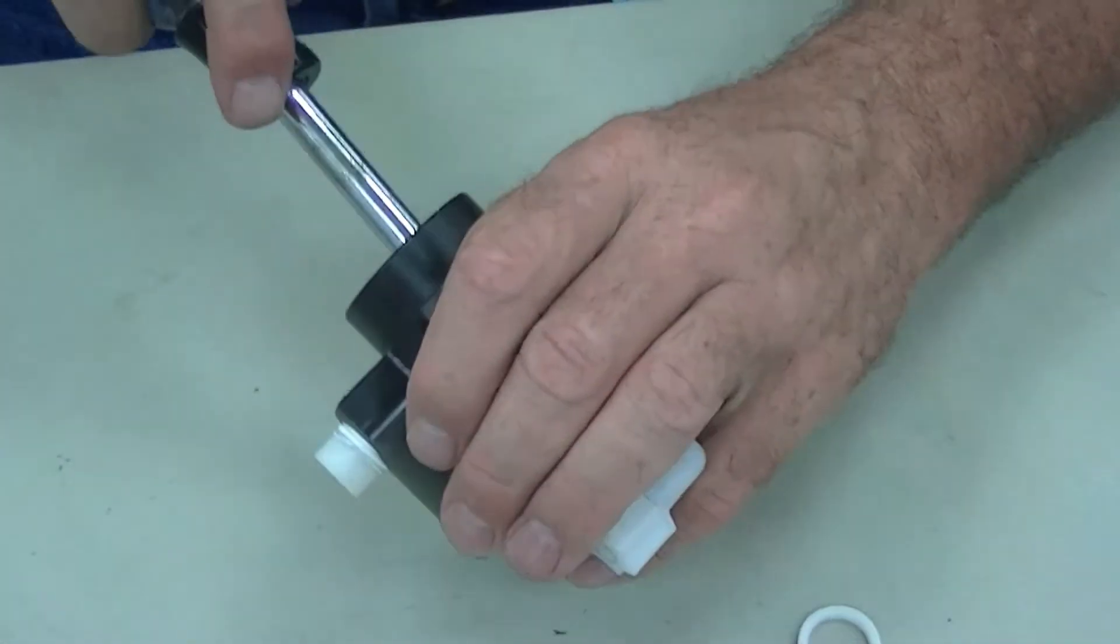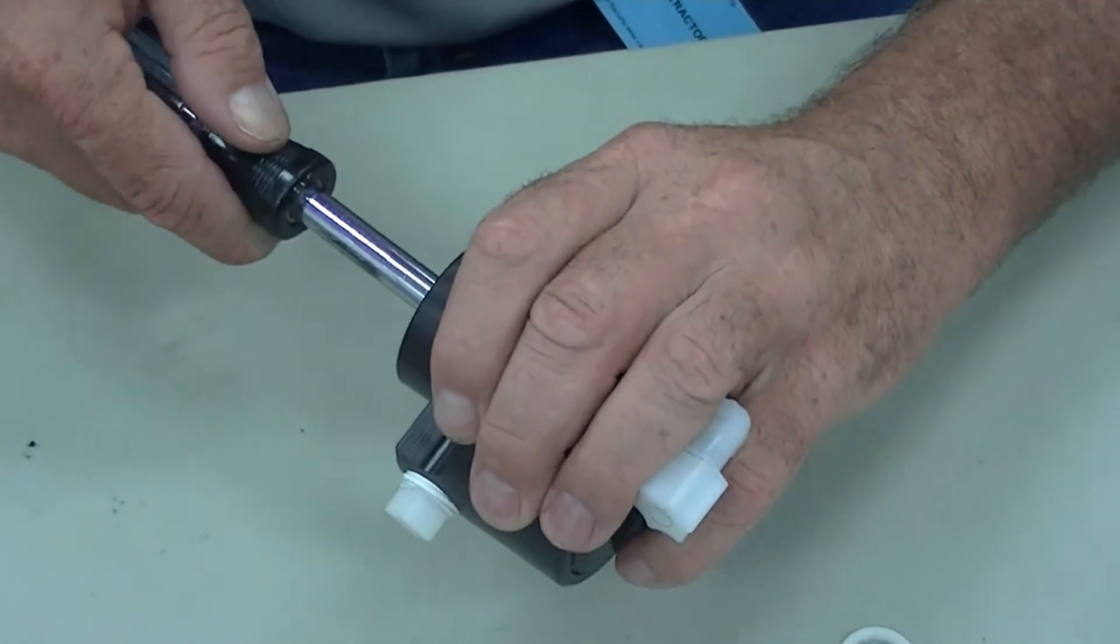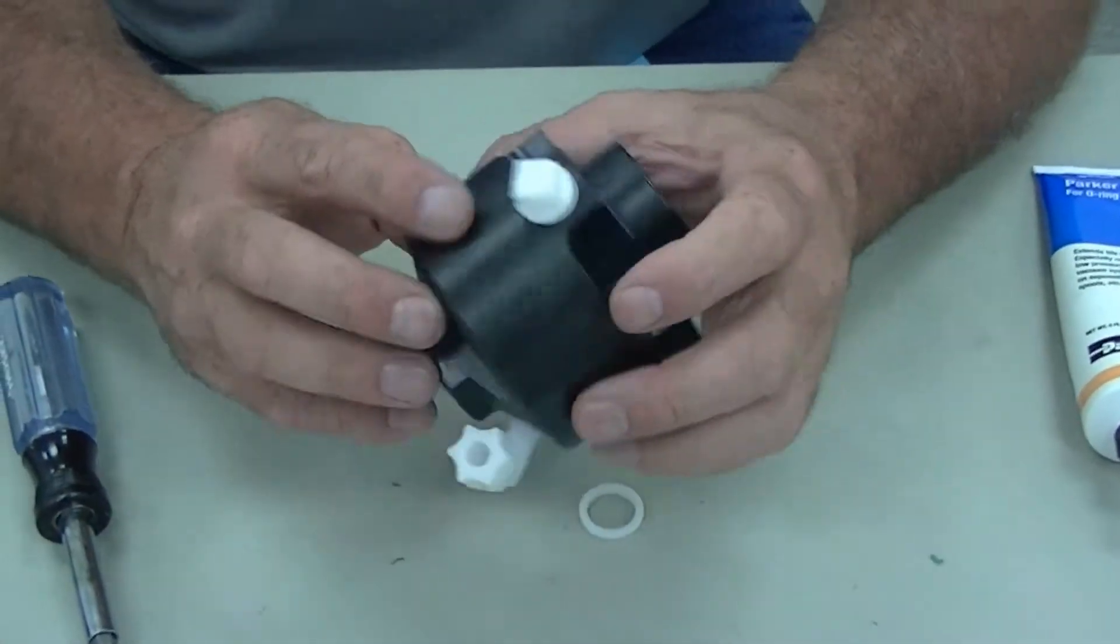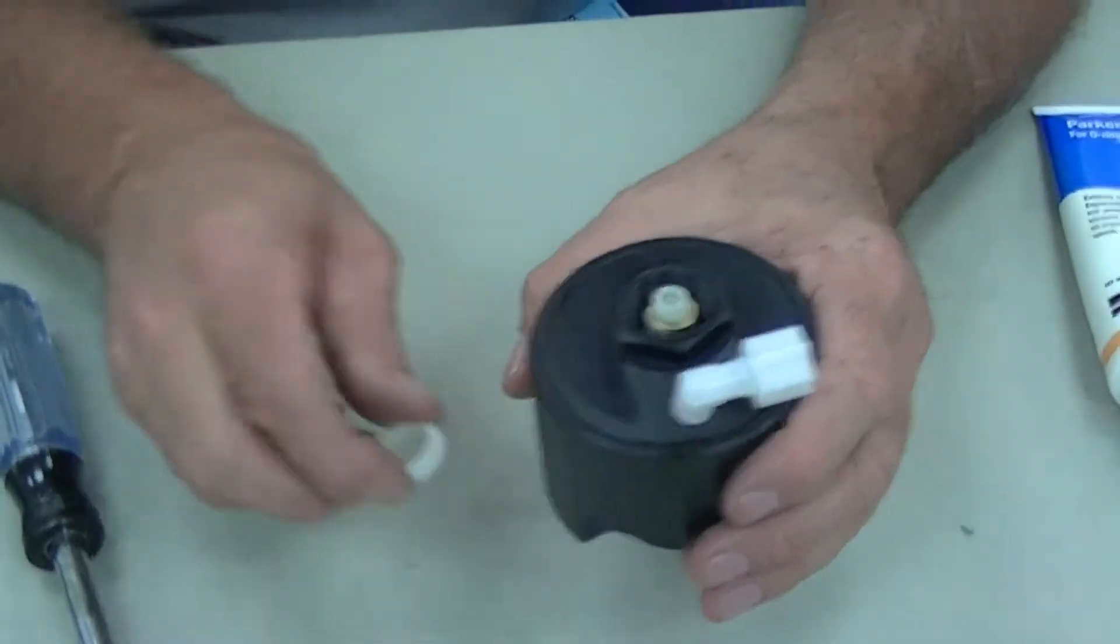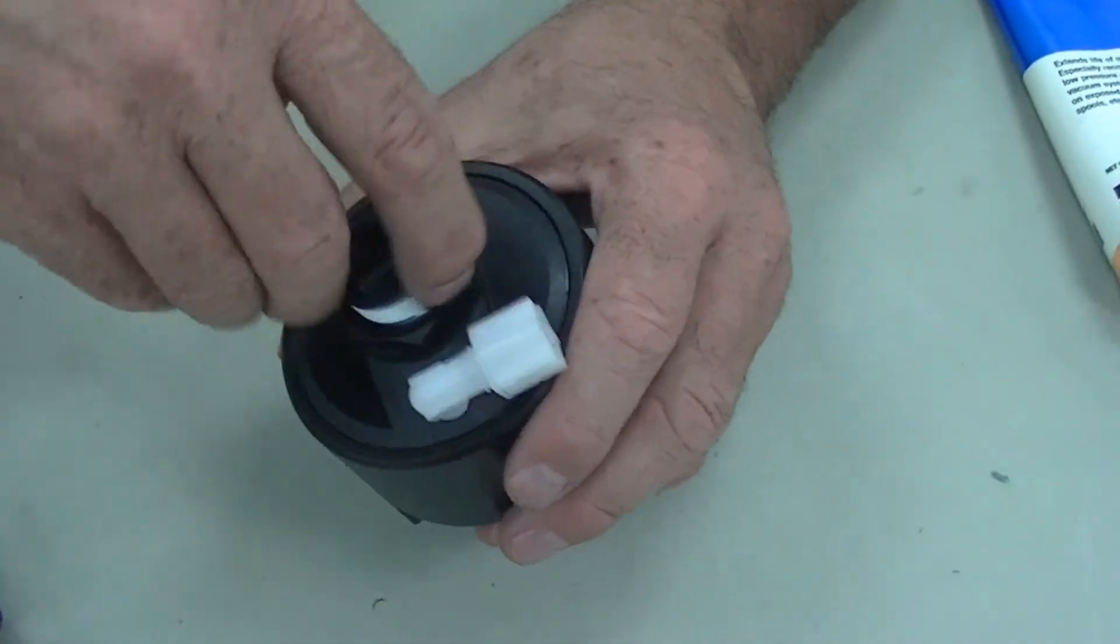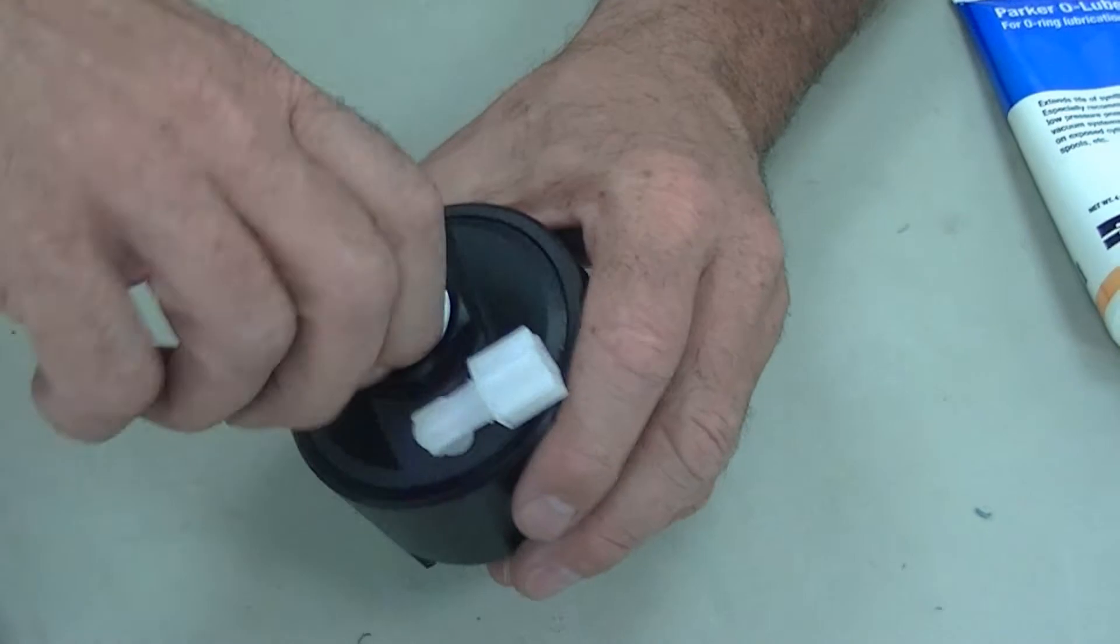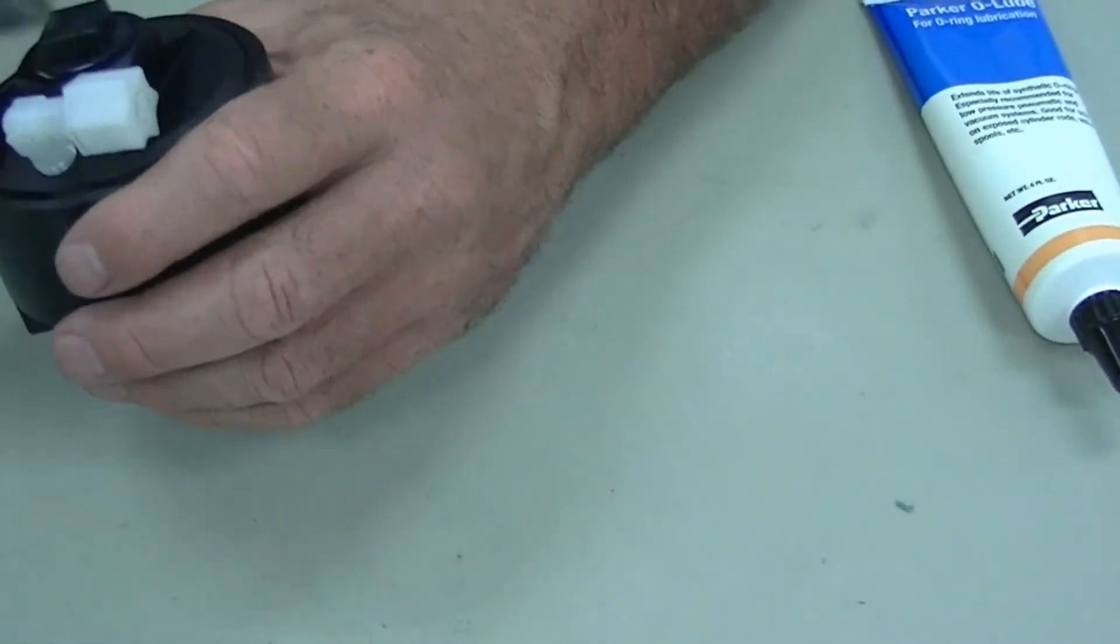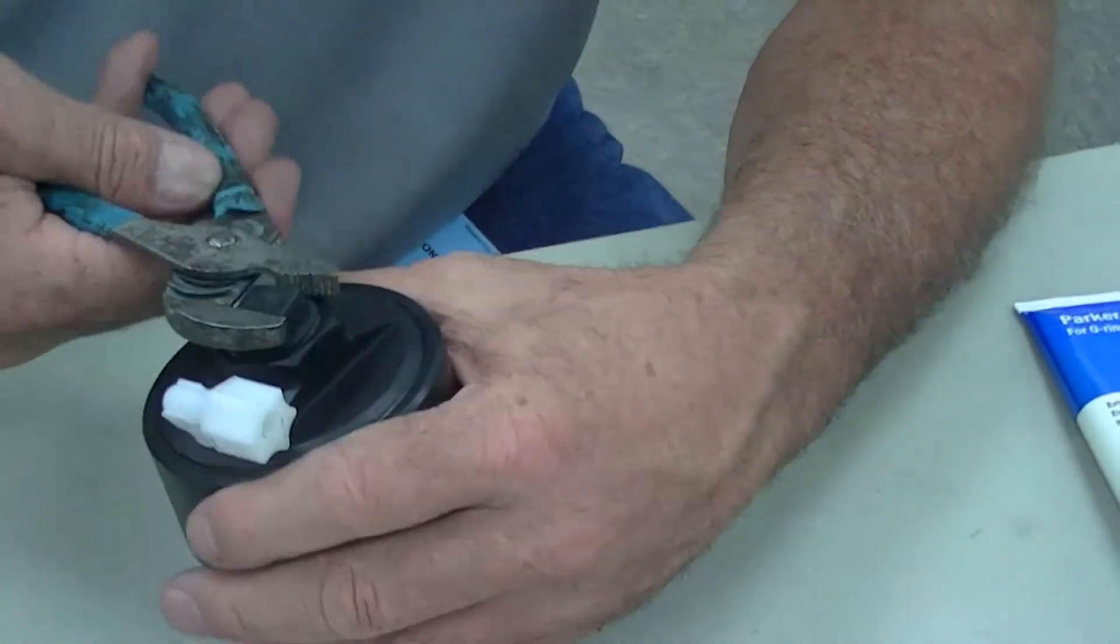And again, you want to snug this up pretty good. Get that in there, you don't want that coming apart. So you got that back together, now you can go ahead, put your spacer in, put the air side cap back on, you can go ahead and tighten that up, so basically it bottoms out, that's what that spacer's for.